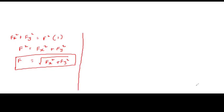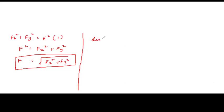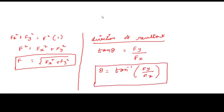To calculate the direction of the resultant, from the triangle we can see Fx, Fy, and F. The direction of the resultant is represented by theta. Using the tangent ratio — opposite side by adjacent side — we get tan θ = Fy / Fx. Therefore, theta equals tan inverse of (Fy / Fx), which gives us the direction of the resultant.